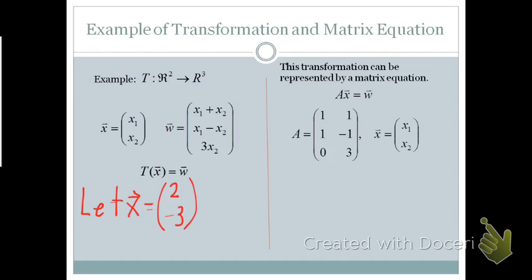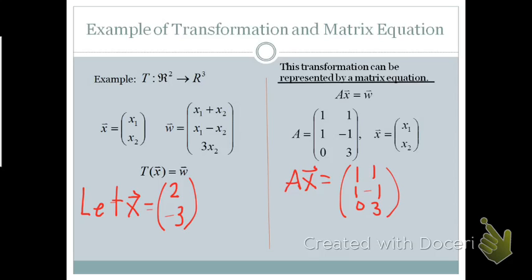This same transformation can be represented by the matrix equation A times the vector x equals w. For x = (2, -3), we set up the coefficient matrix with entries 1, 1; 1, -1; 0, 3, multiplied by the vector (2, -3). Performing this multiplication gives the same result: (-1, 5, -9).